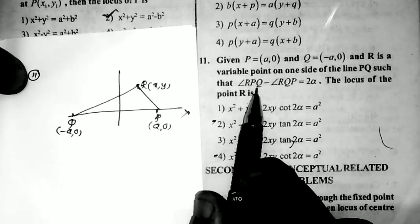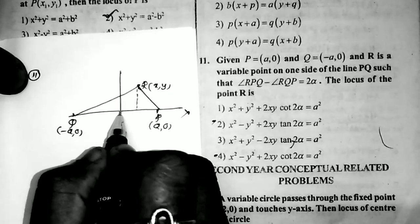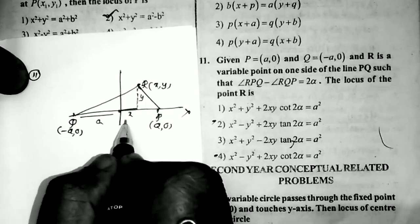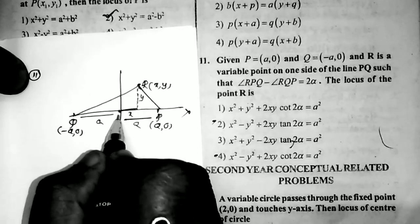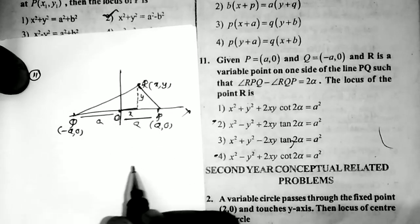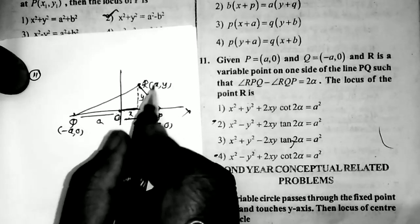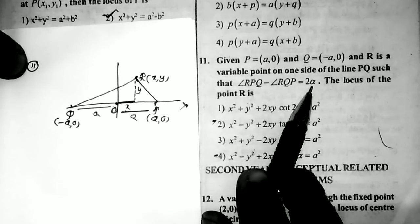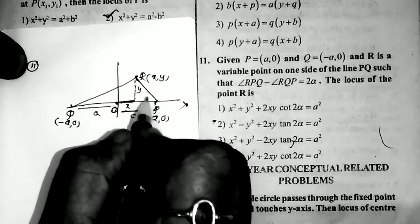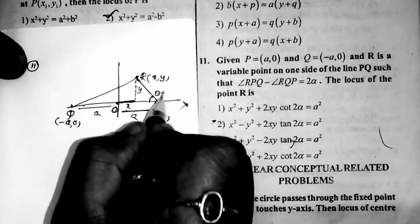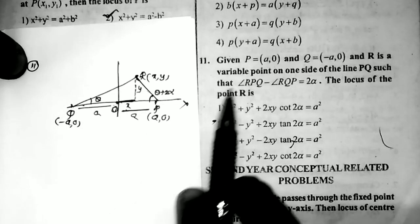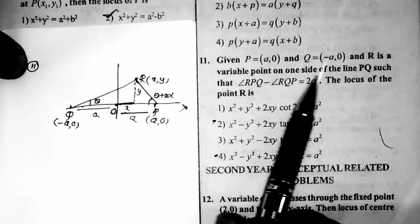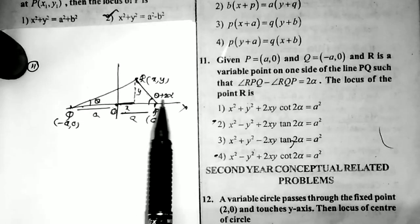From the diagram: angle RPQ = θ + 2α and angle RQP = θ. The difference is (θ + 2α) - θ = 2α, which matches the given condition. I take tan(2α) = tan((θ + 2α) - θ). Using the tan(A - B) formula: tan(A - B) = (tan A - tan B) / (1 + tan A · tan B).